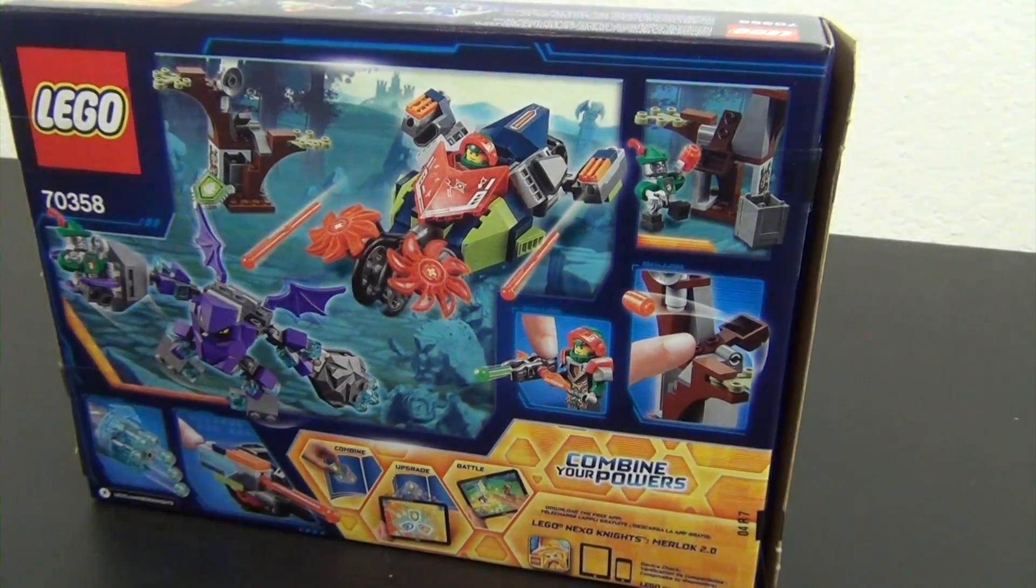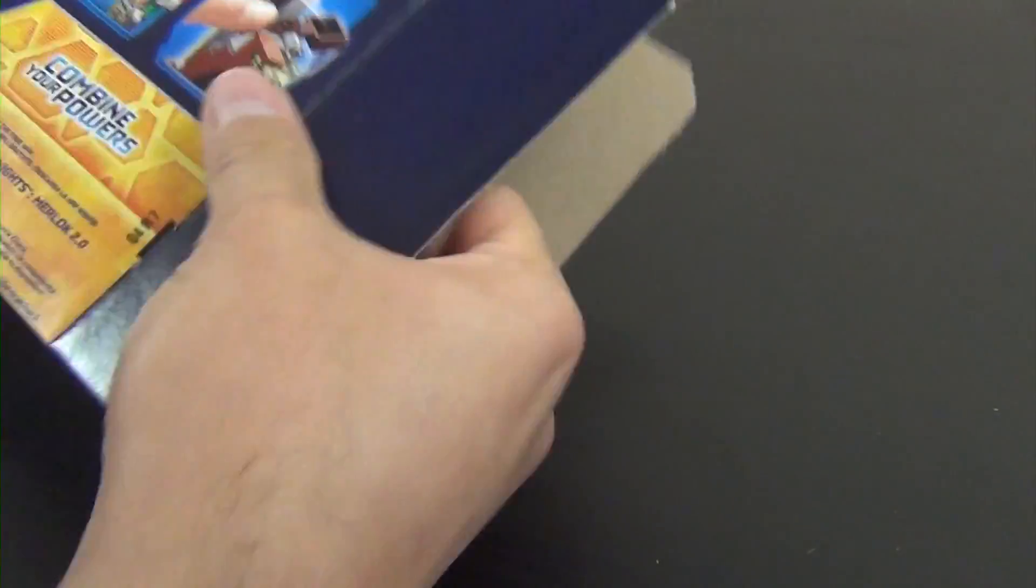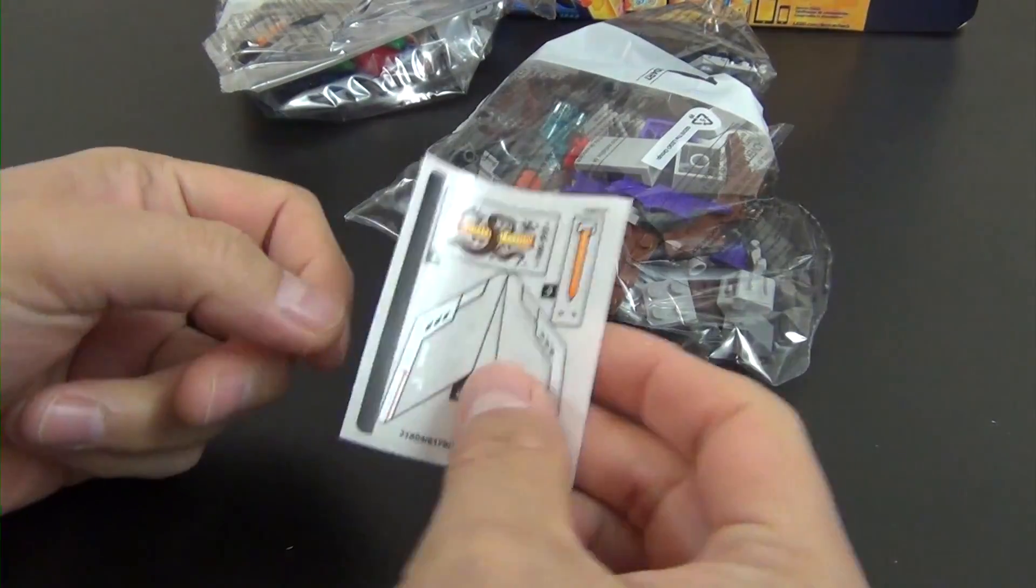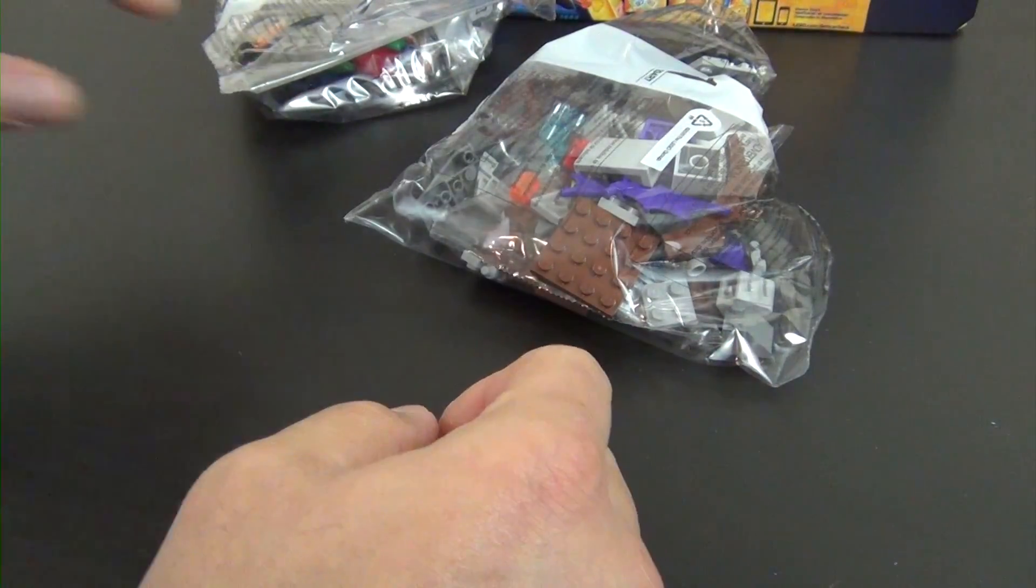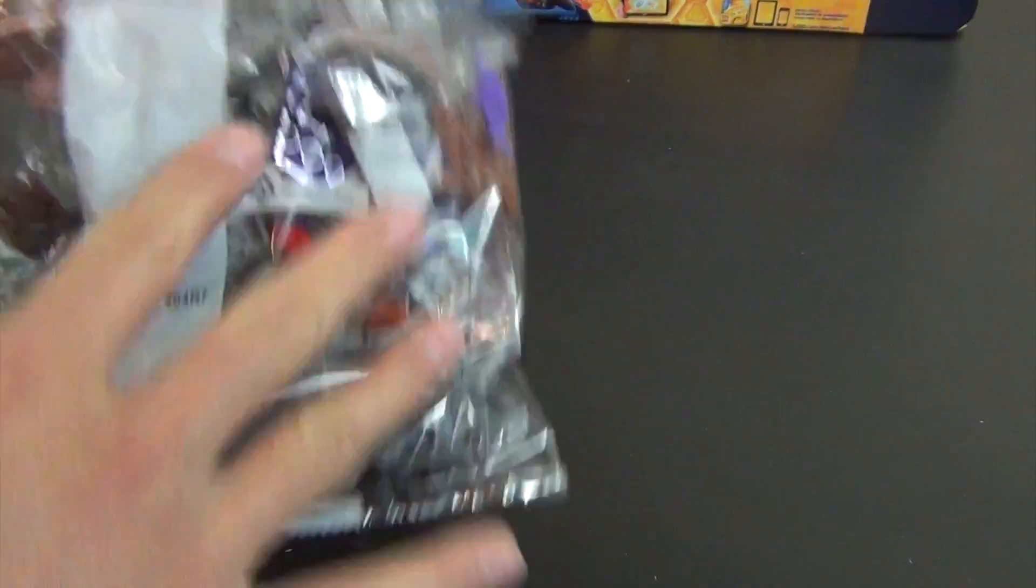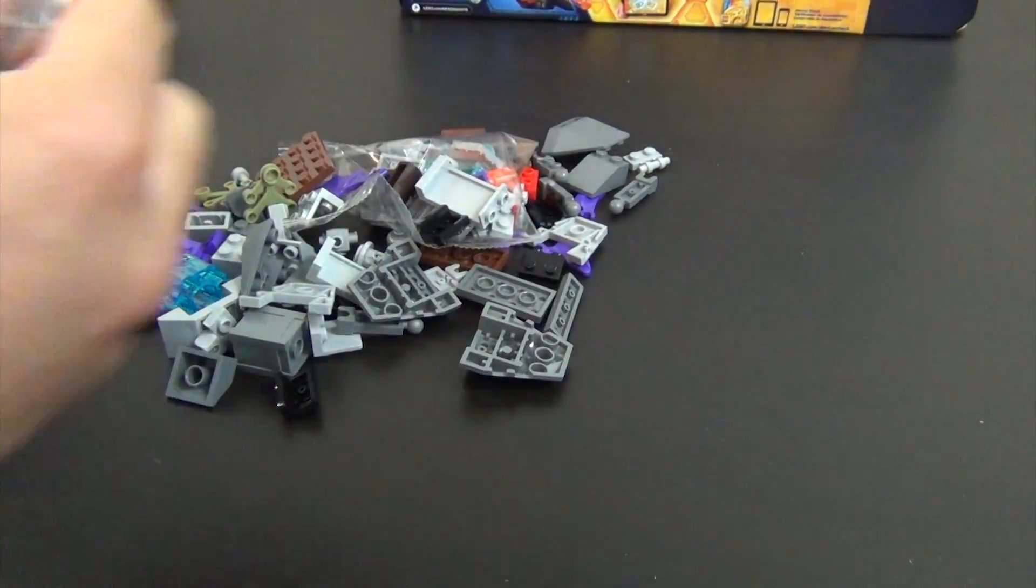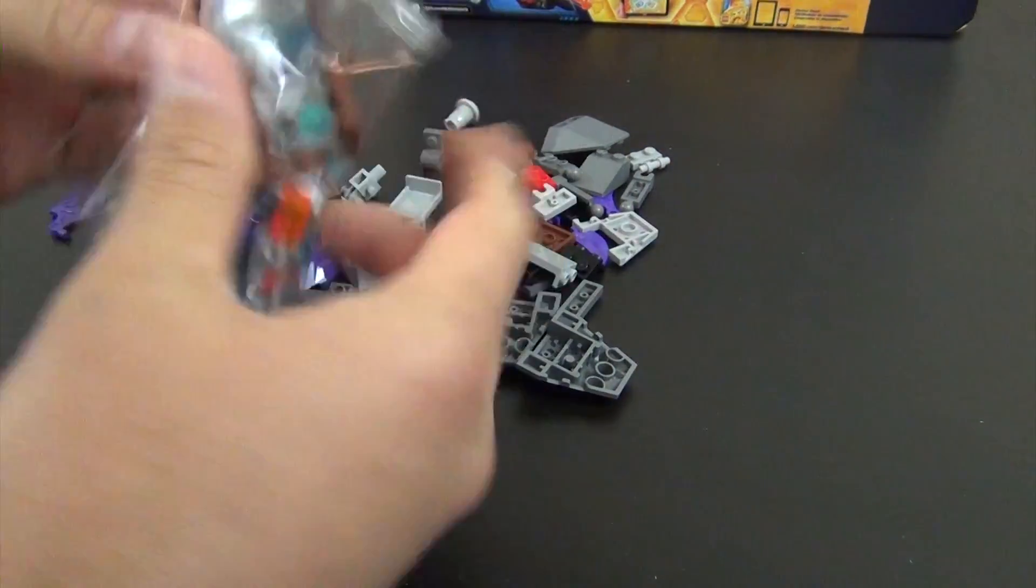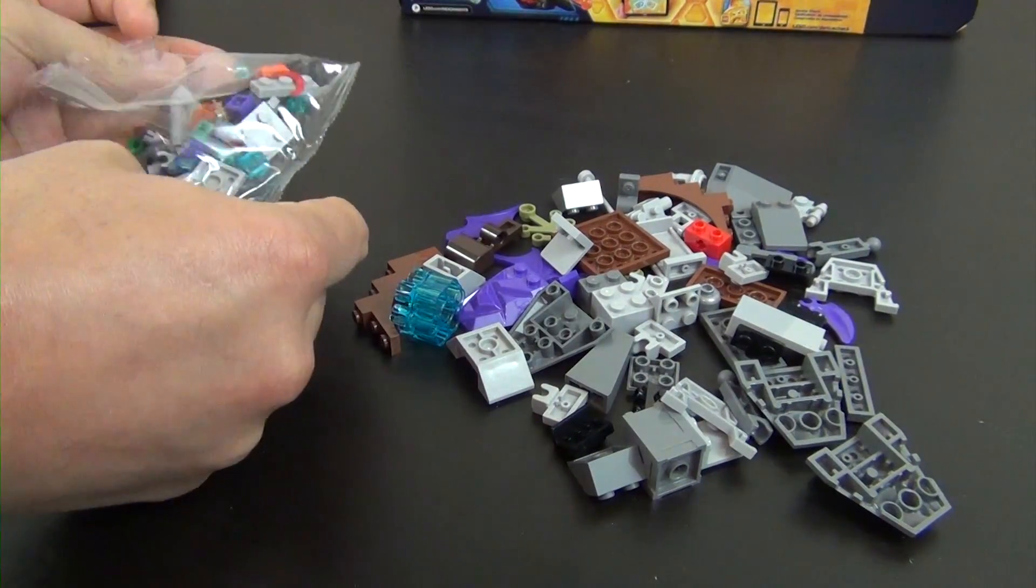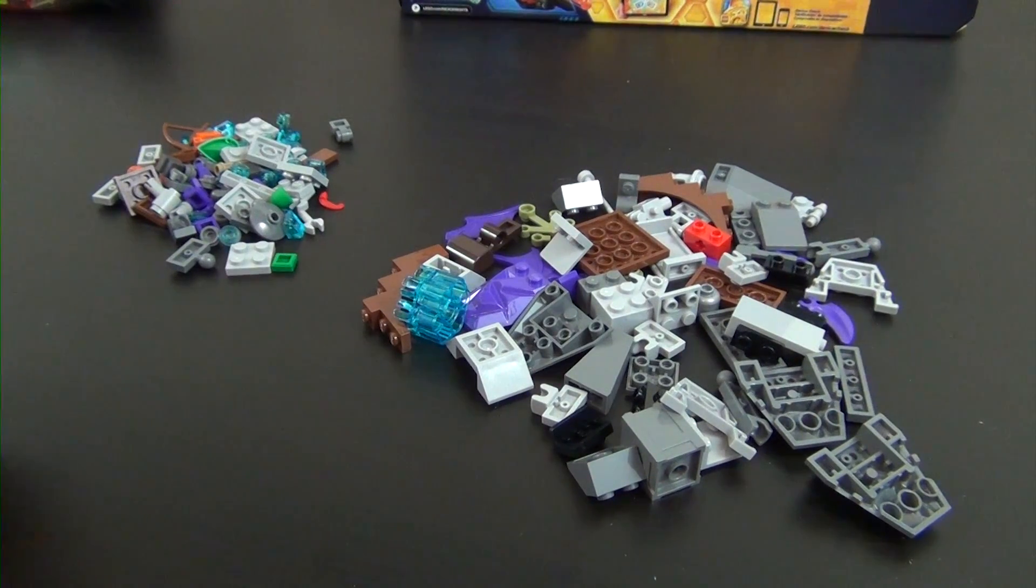Let's cut this open and see what we have in here. Okay, we have one instruction book, a small sticker sheet with a couple stickers on it, and numbered bags - bag two and bag one. Open up bag one - small bag and the big bag. Alright, all set there.